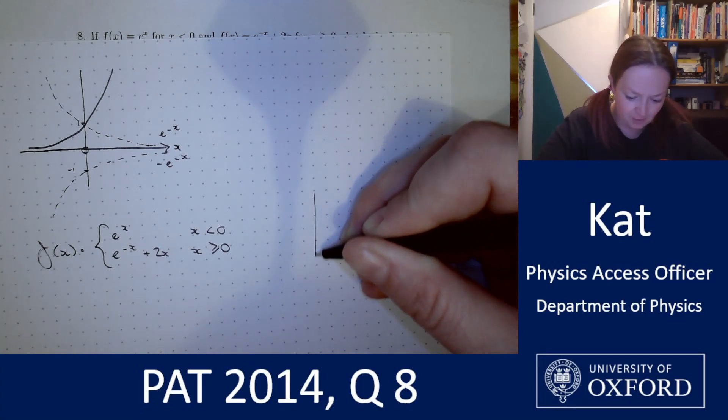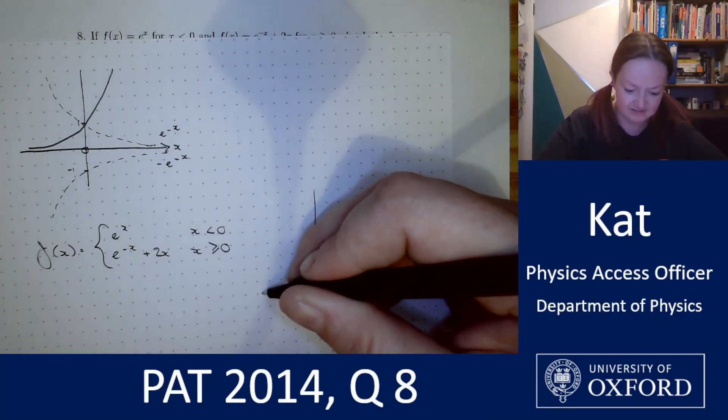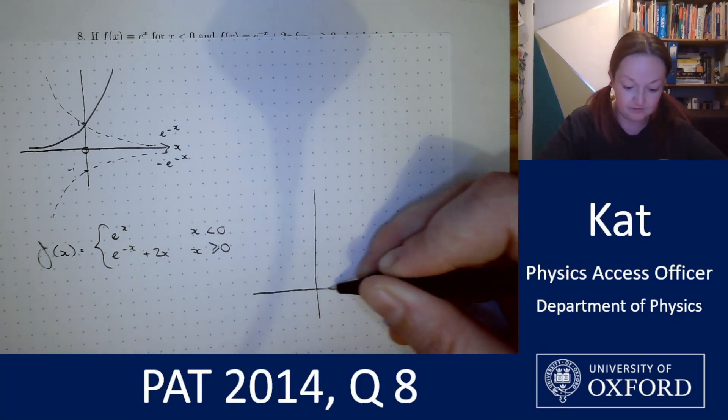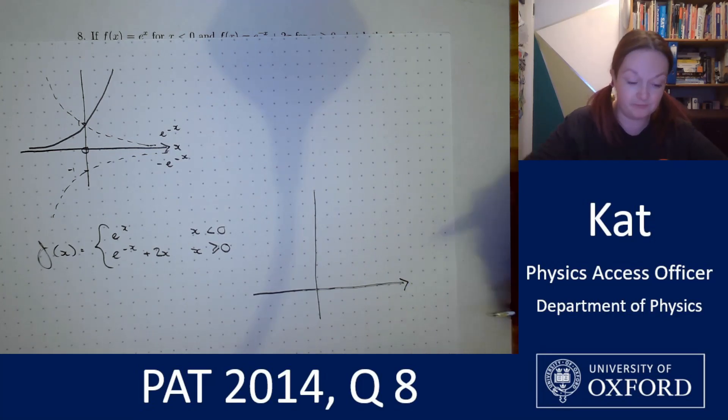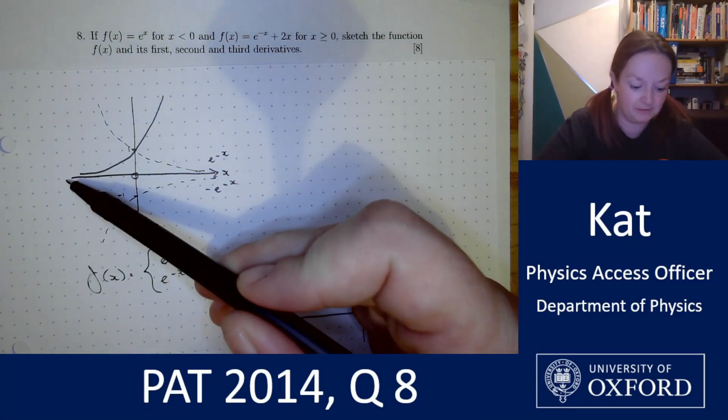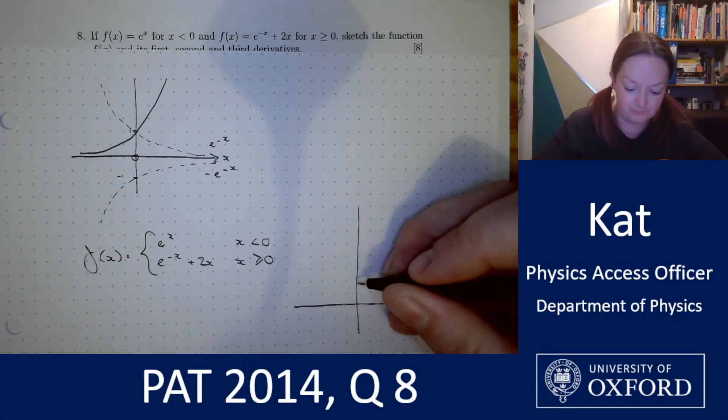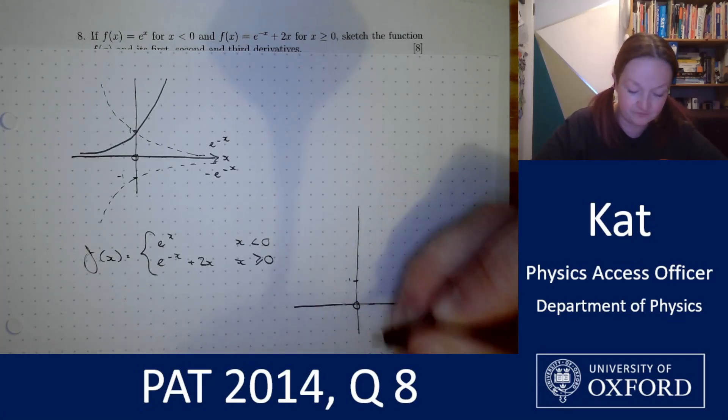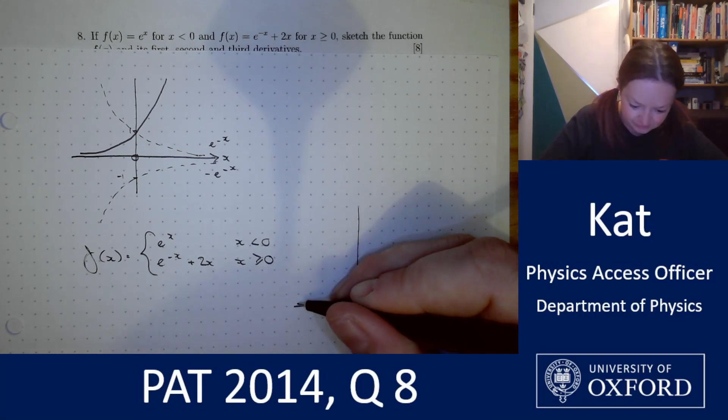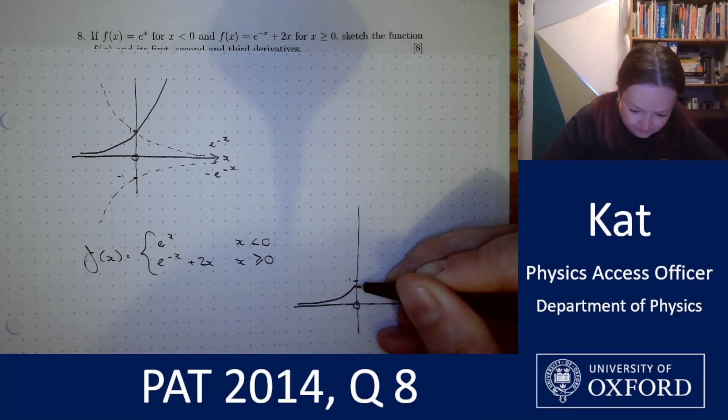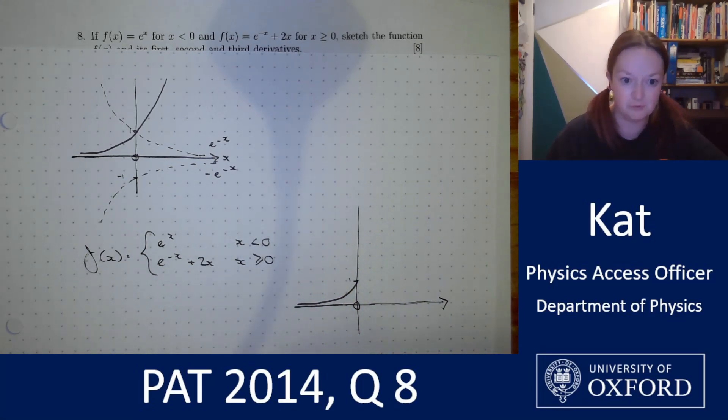The first part for x is less than or equal to zero is really straightforward. We've actually already sketched it up here, it's this portion of the curve so we know it comes as far as zero one and we know it's got that asymptote. So far so good.